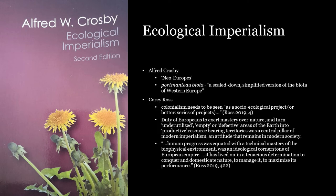It's the triumph of man over nature — Western technology being able to control unruly domains — and because Europeans have this capability, it not only entitles them to govern these areas of the world but gives them a duty to do so, turning underutilized, empty, or defective areas of the earth into productive, resource-bearing territories. This was the central pillar of modern imperialism, but often at hugely ecologically destructive consequences. Ross notes that the ecological devastation was seen as proof that it was working — human progress equated with technical mastery of the biophysical environment.